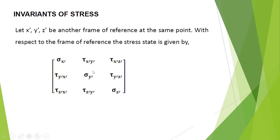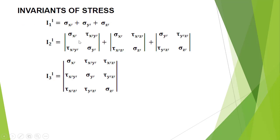The minor of the second principal diagonal element is: sigma x-dash, tau x-dash z-dash, tau z-dash x-dash, sigma z-dash. The minor of the third element is: sigma x-dash, tau x-dash y-dash, tau y-dash x-dash, sigma y-dash. So the second invariant is the sum of the determinants of these three minors. The third invariant is simply the determinant of the stress tensor matrix itself.